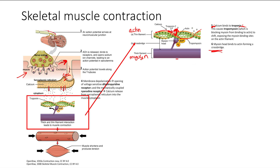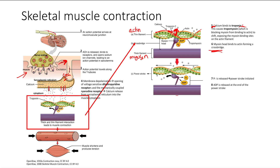It's going to form a cross bridge. Note that myosin has ADP and phosphate — that's important. It's going to bind to actin and release that phosphate, kicking it off. When it does that, it performs a power stroke, which is how it shortens the muscle.